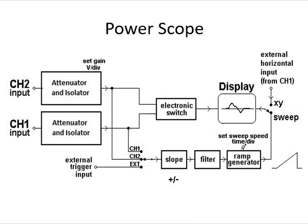Today we will start with the power oscilloscope, also called a power scope. There are little changes in a power scope. As shown in the block diagram, it consists of an attenuator and isolator. Two channel inputs are provided, an electronic switch, a display portion, slope, filter, and ramp generator to get a signal.